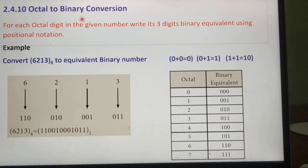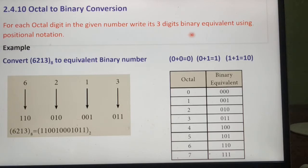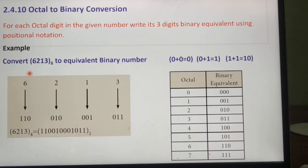That is given here: for each octal digit in the given number, write its 3-digit binary equivalent using positional notation. Next we can see the example for octal to binary conversion.